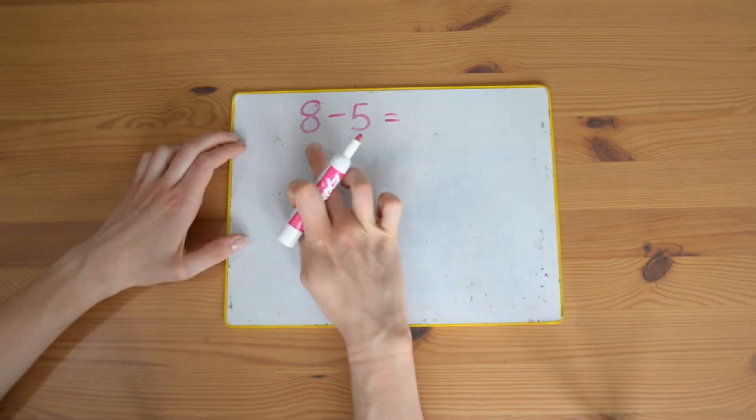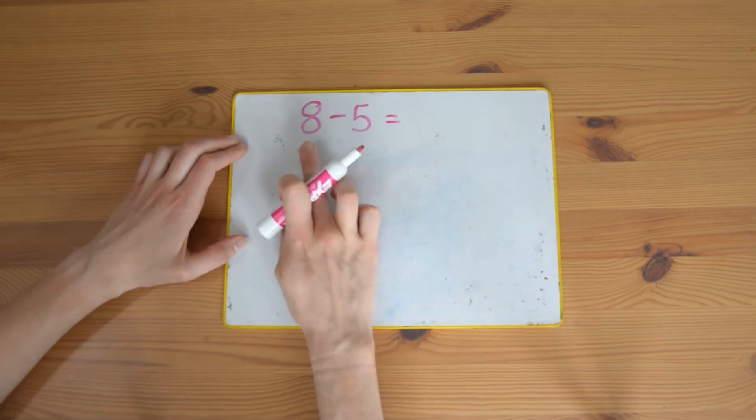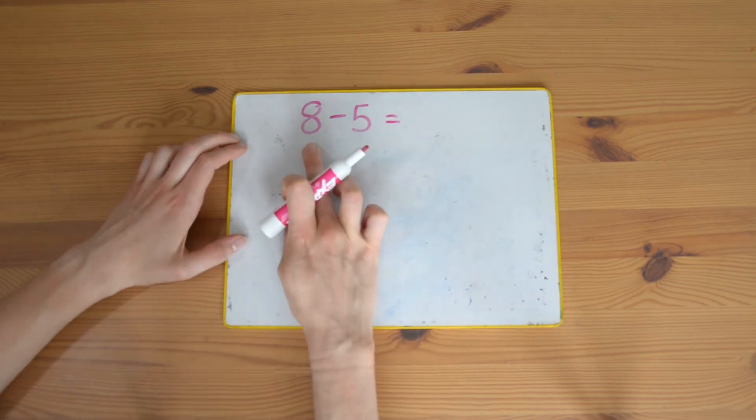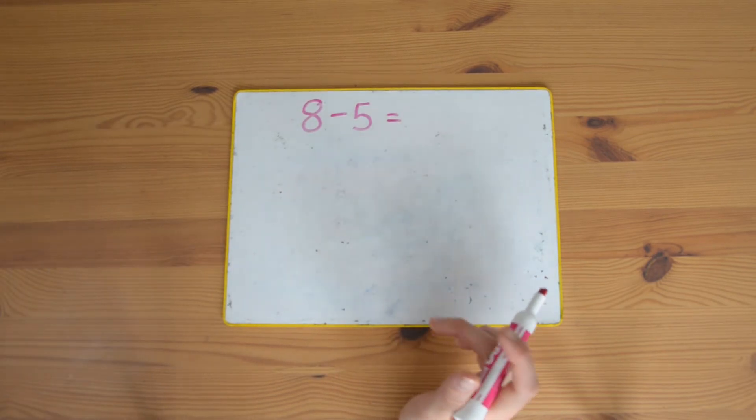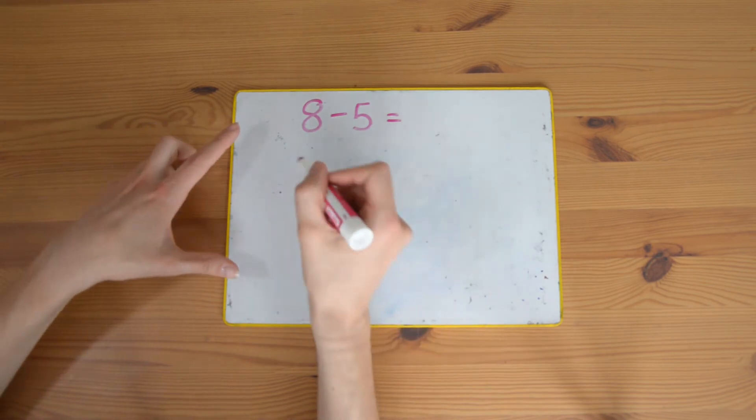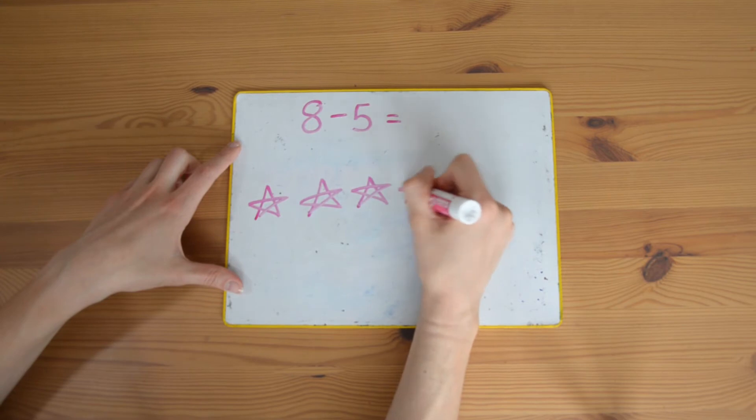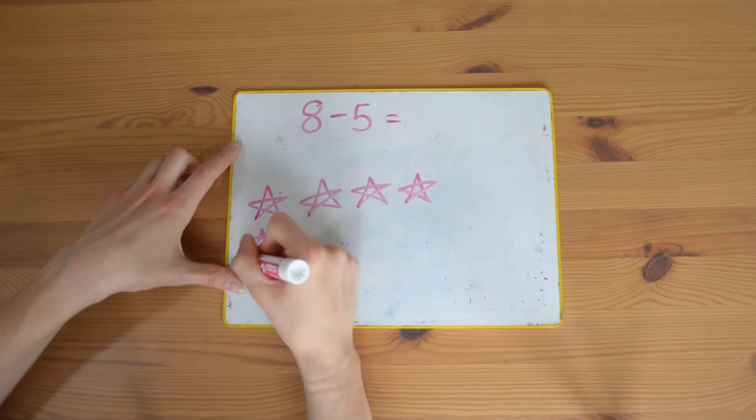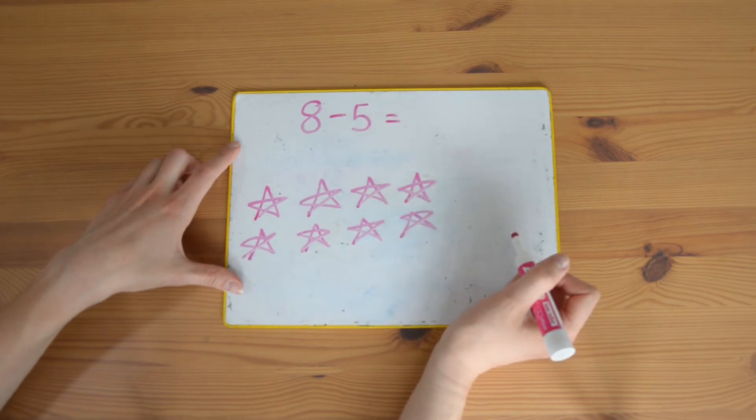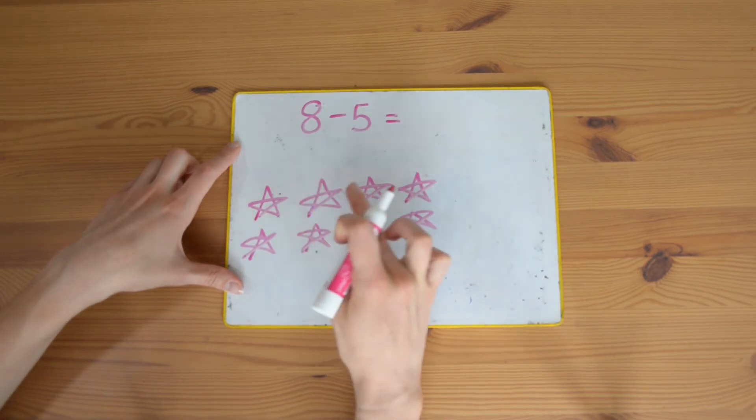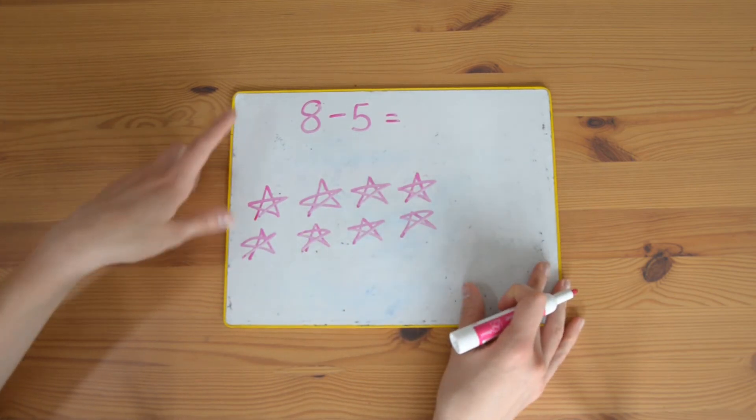Okay, eight take away five equals. Again, the number at the beginning tells me how many I started with. This was my whole number, so eight. I'm going to draw eight stars: one, two, three, four, five, six, seven, eight. Again, just check by counting: one, two, three, four, five, six, seven, eight. Perfect.